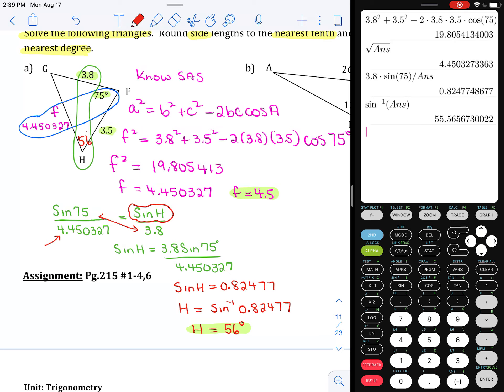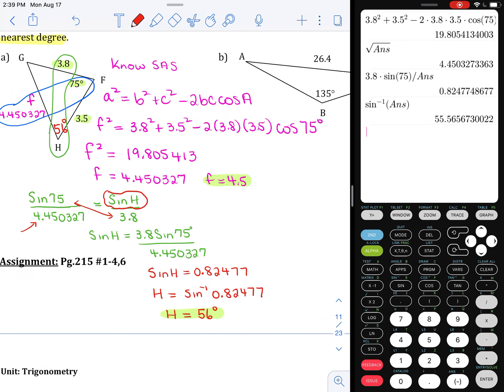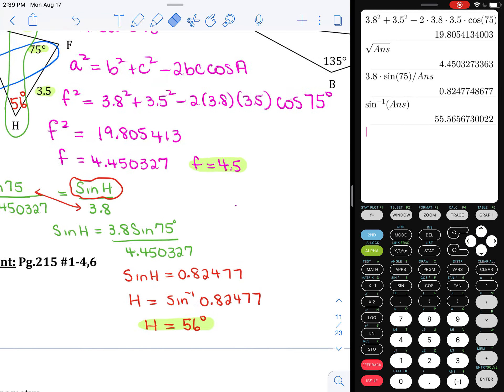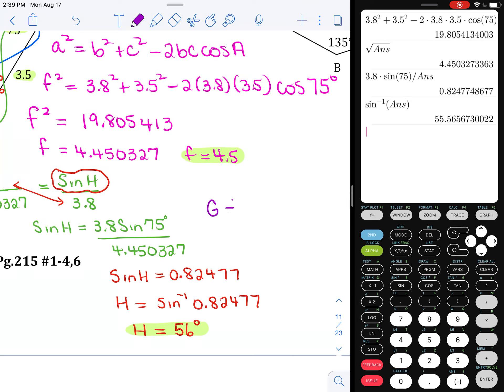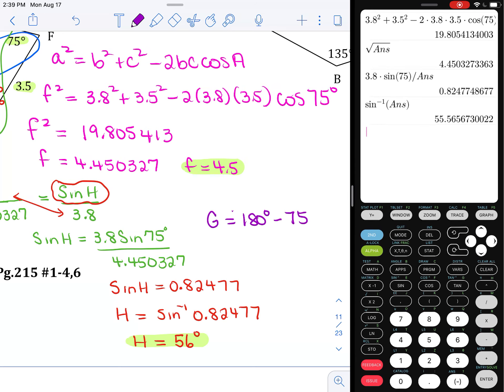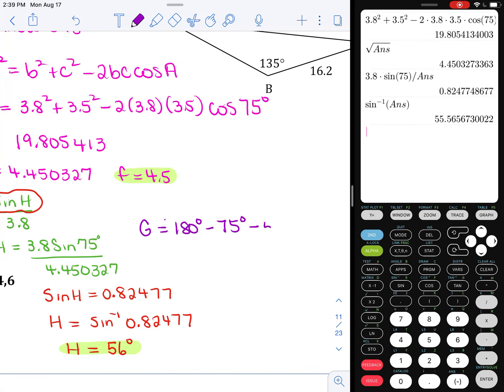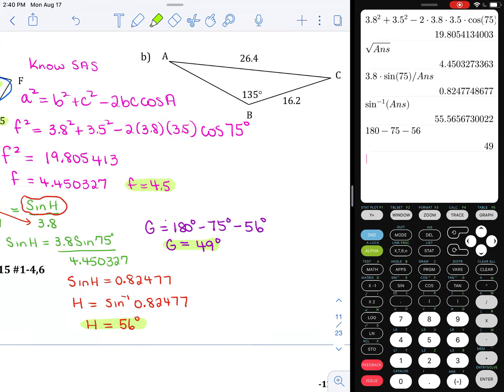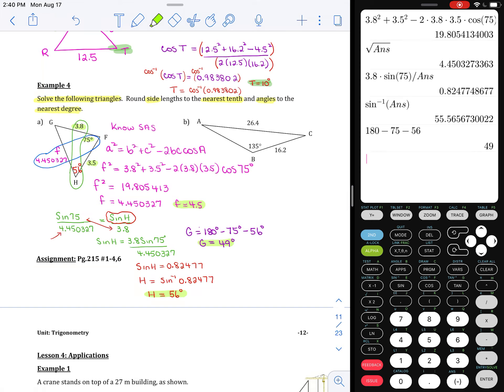Now that you know that H is 56, I'm just going to mark that here as being 56, we can now find angle G just by subtracting from 180 degrees. We don't have to do anything fancy here. So angle G will be 180 minus that 75 that was given, and then minus the 56. And if I do that on my calculator, 180 minus 75 minus 56, G is going to turn out to be 49 degrees. And I'll highlight that. So a lot of work to get answer A done.